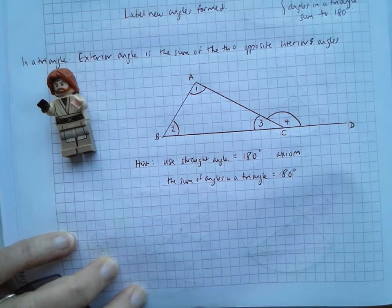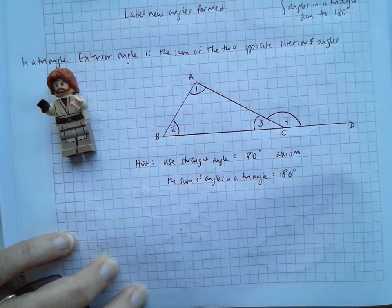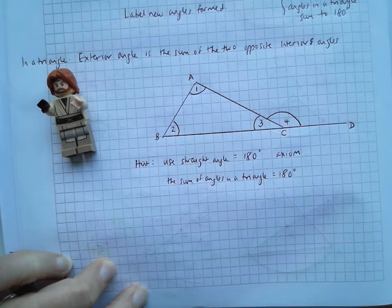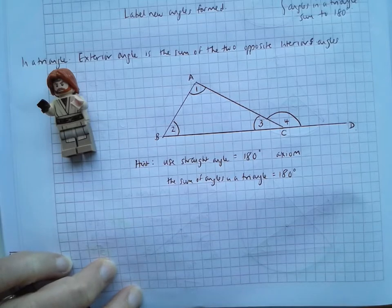So we can use the sum of angles in a triangle is equal to 180 degrees. I think you should be able to do it from here, so I'm going to pause again. Give it a go yourself.